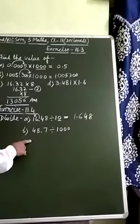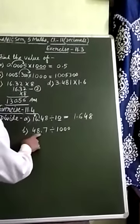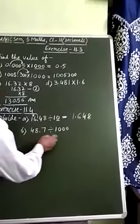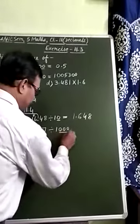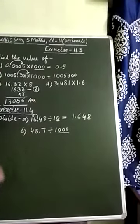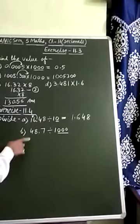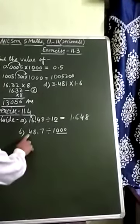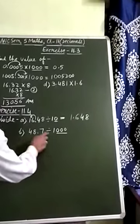Look at the second example. 48.7 divided by 1000. So, in 1000, there are 3 zeros. Therefore, in dividend, decimal point should move 3 digits to the left side. But, as you notice, there are only 2 digits, 4 and 8. We need 3 digits. How can we have 3 digits here?